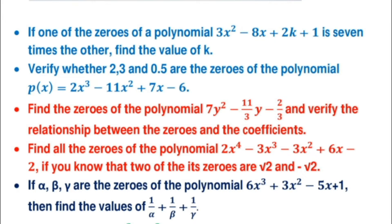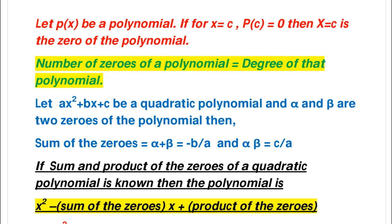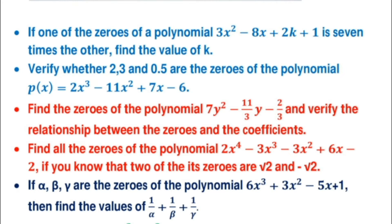You may get a question: find the zeros of the polynomial and verify the relationship between the zeros and the coefficients. Remember: the sum of the zeros equals negative of the coefficient of x divided by the coefficient of x², and the product of the zeros equals the constant term divided by the coefficient of x². If the variable is y, the sum of the zeros will be minus the coefficient of y divided by the coefficient of y², and the product will be the constant term divided by the coefficient of y².